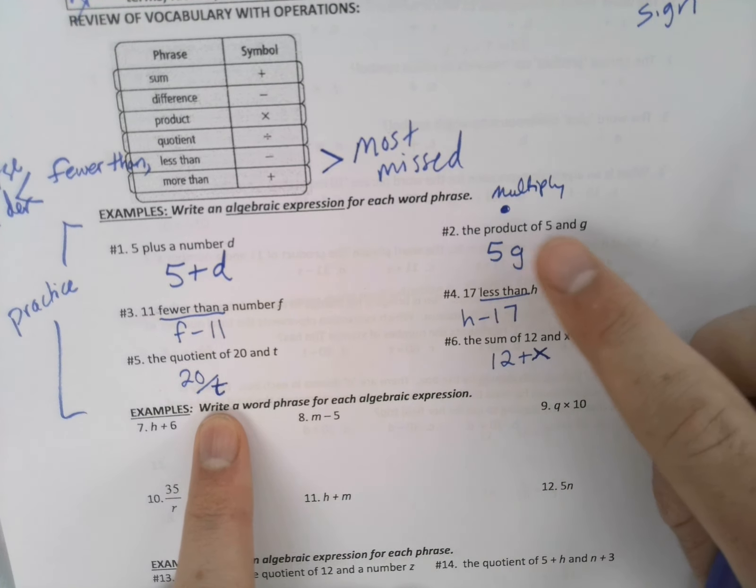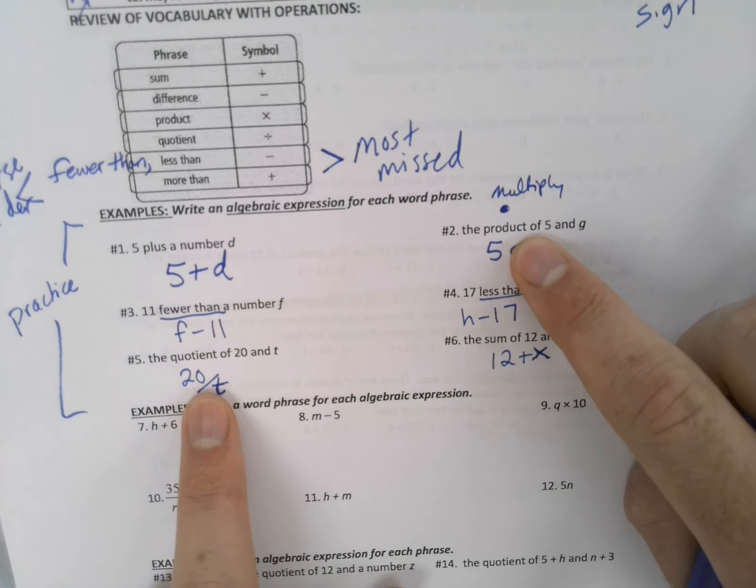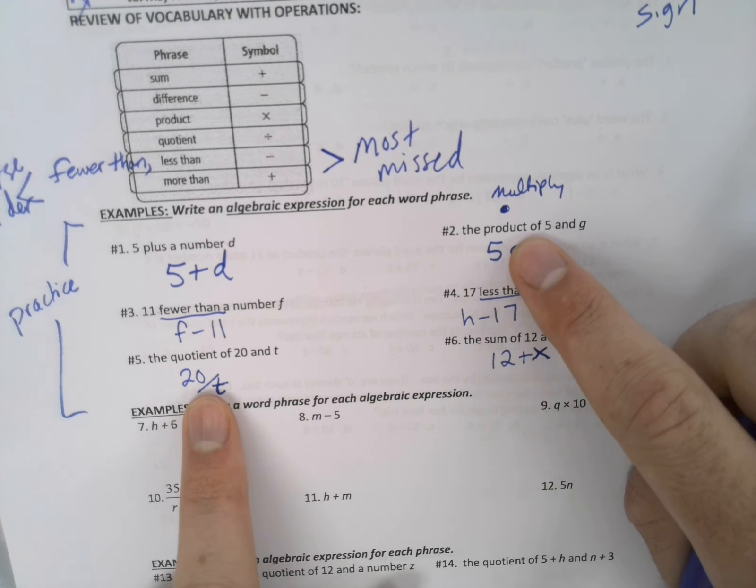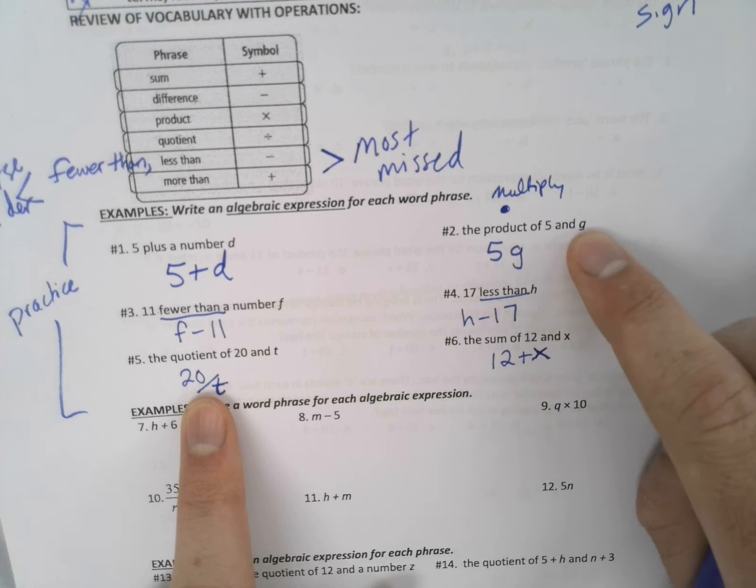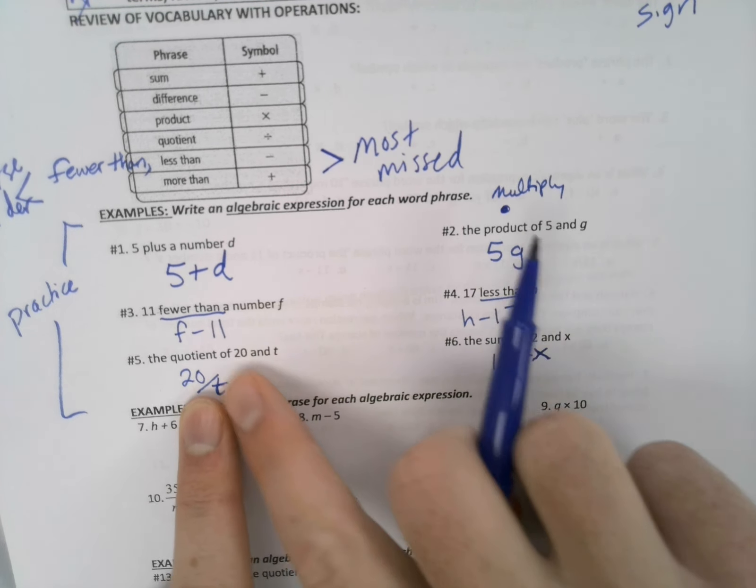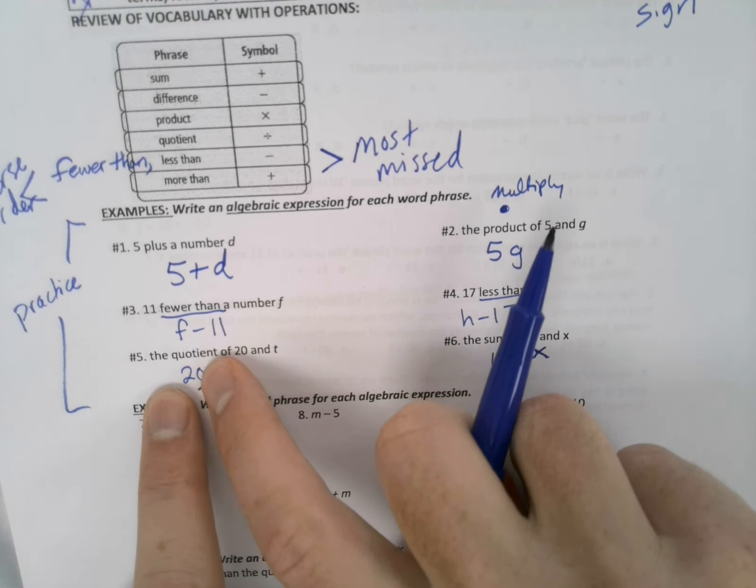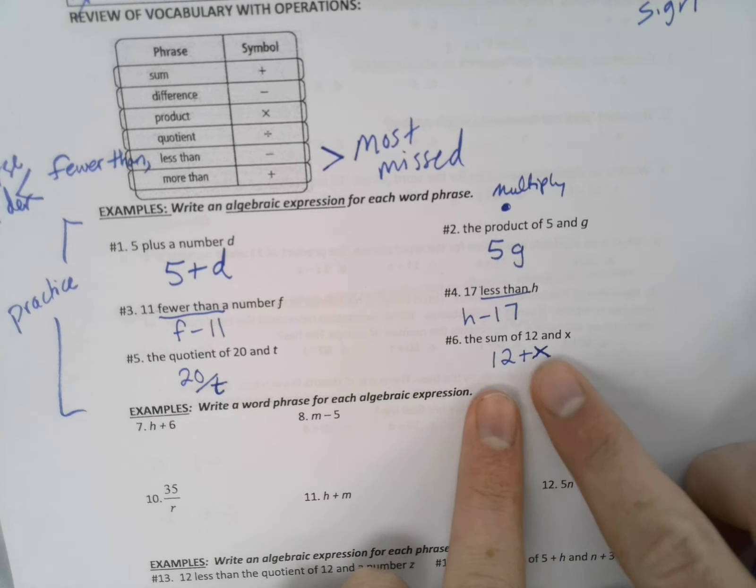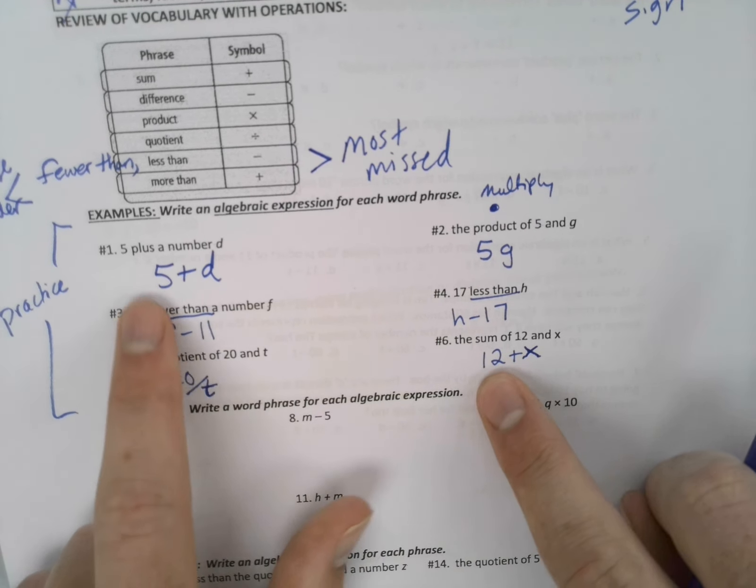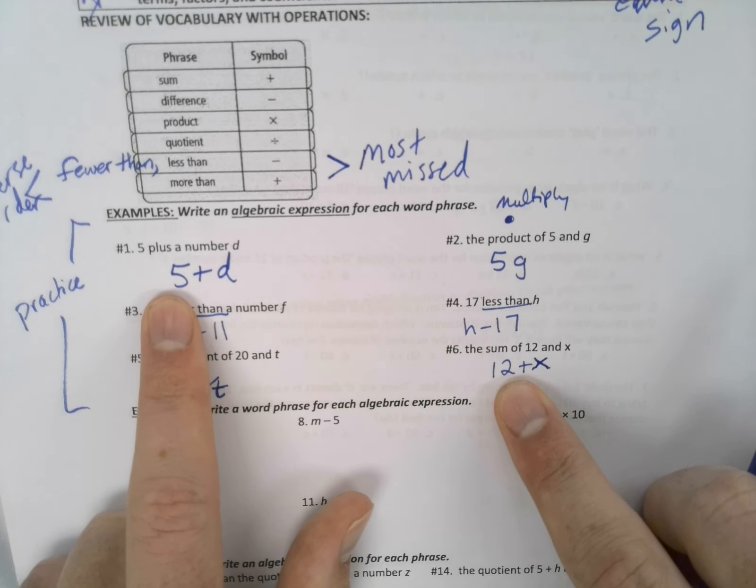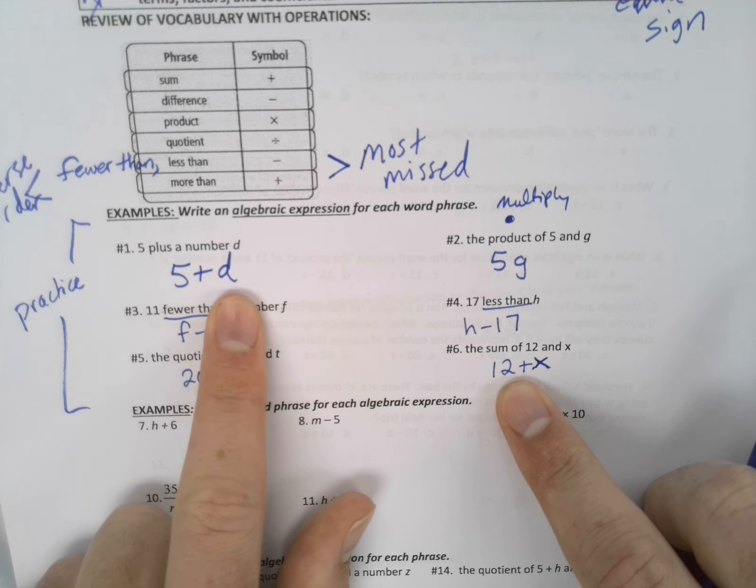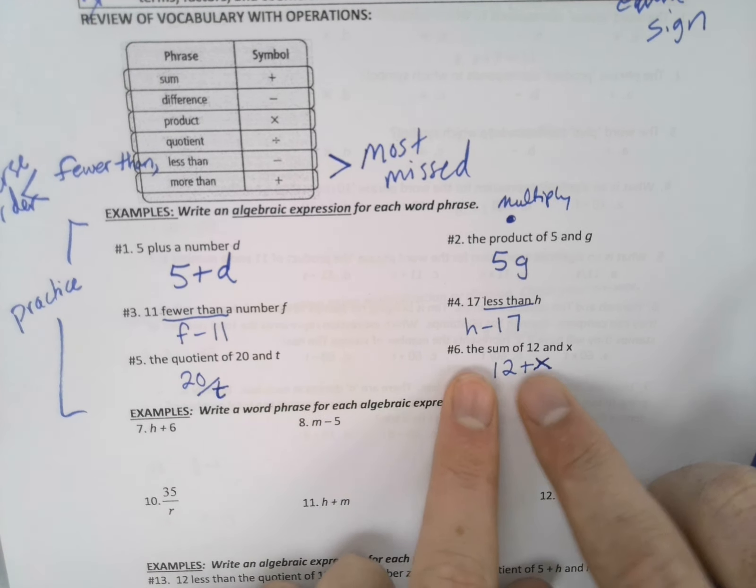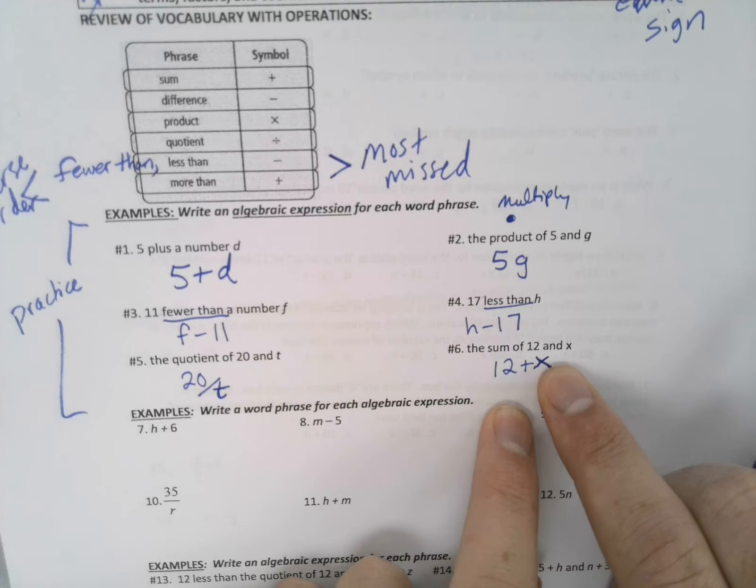The good news about multiplication and division is that those are pretty much always written the way they are given to us. The product of 5 and G, 5 times G. The quotient of 20 and T, 20 divided by T. And you can see that number one and number six, we actually got a little bit of a break. Five plus a number D, that we can write that straight up. And the sum of 12 and X, we can write that straight up.